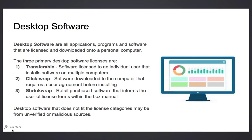Desktop software refers to all the applications, programs, and software licensed and downloaded onto a personal computer. The three primary desktop software licenses are Transferable, ClickWrap, and ShrinkWrap. Transferable software allows an individual user to install software on multiple computers.